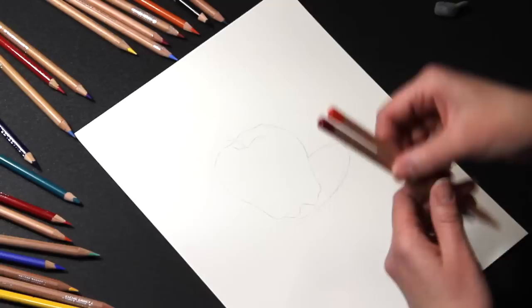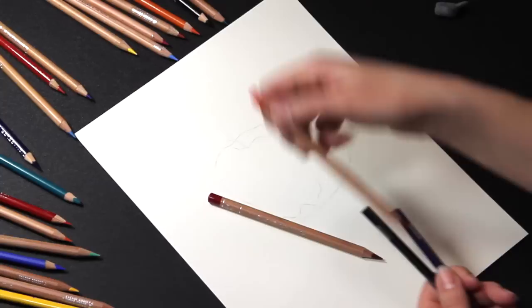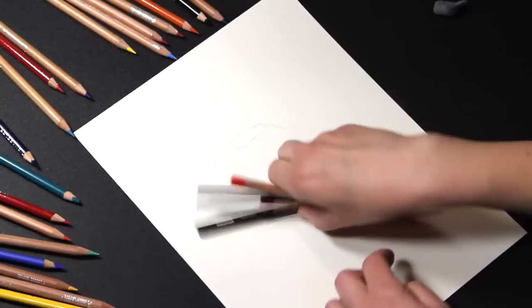Once my initial drawing is complete, I can start building up colored pencil. This is a red delicious apple, and the colors I am using for shading are a cool red, a warm red, indigo blue, and violet.